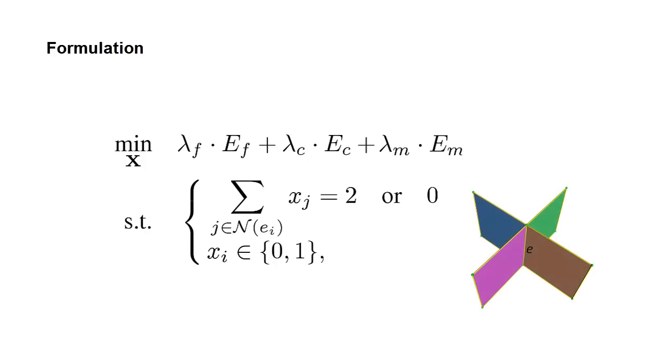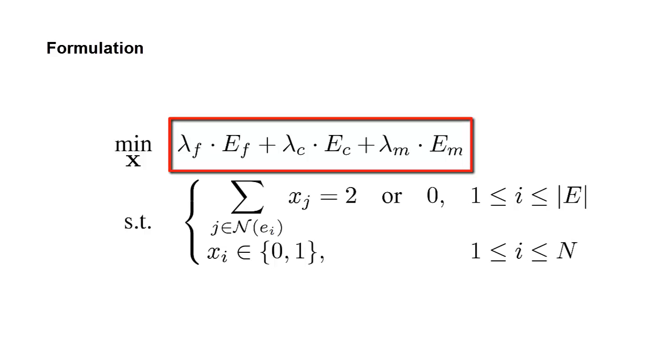In this example, the edge E connects four candidate faces. Our hard constraints enforce that zero or two of the faces can be selected. This formulation is a binary linear program. By minimizing this energy, the union of the selected faces comprise a polygonal surface model approximating the object.